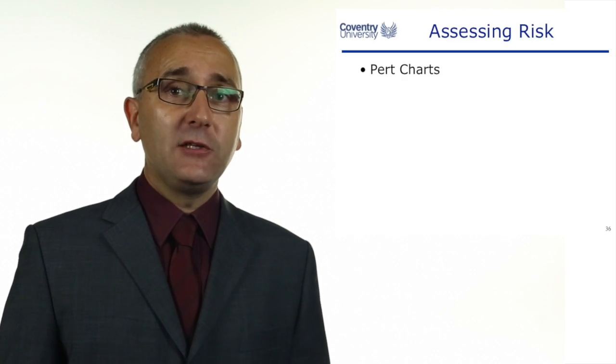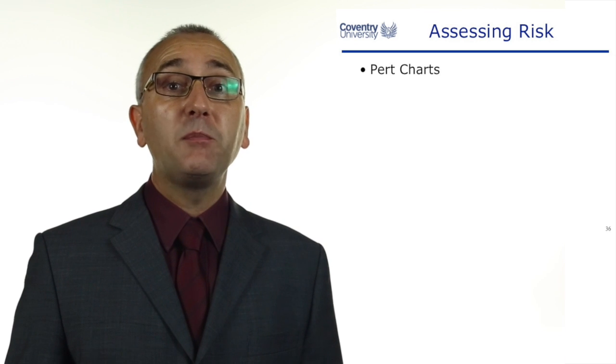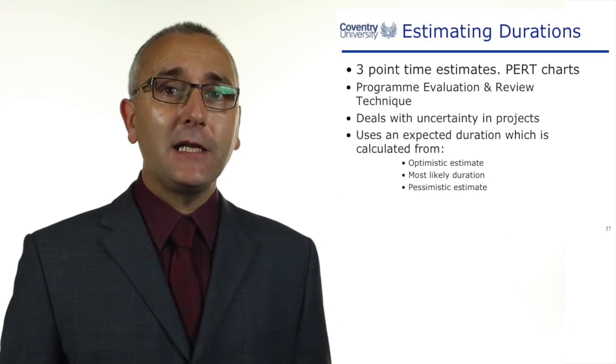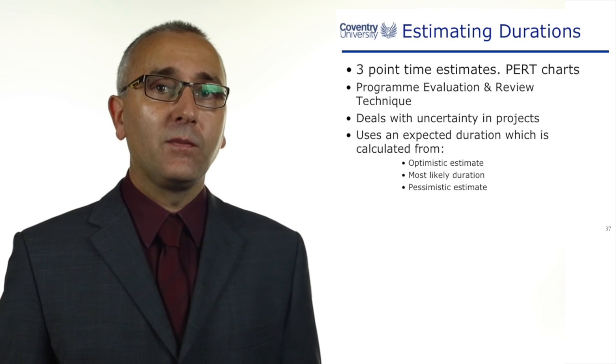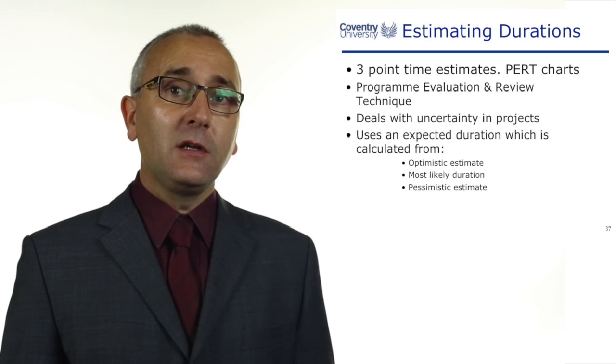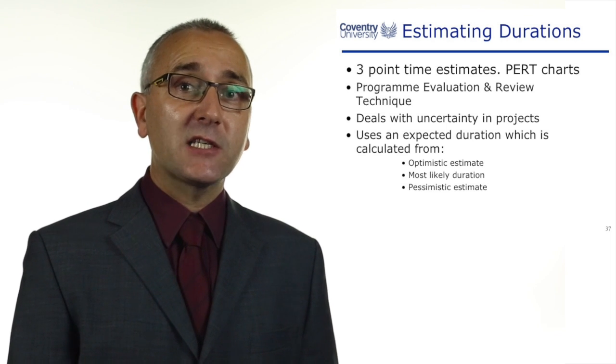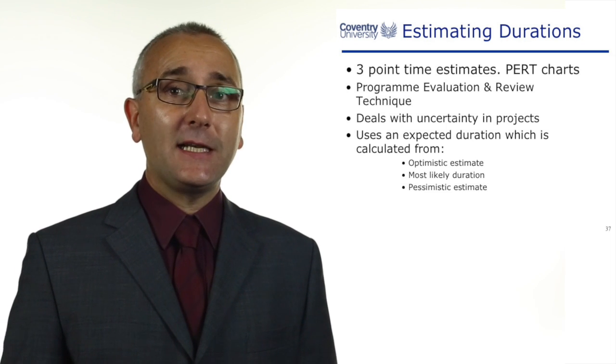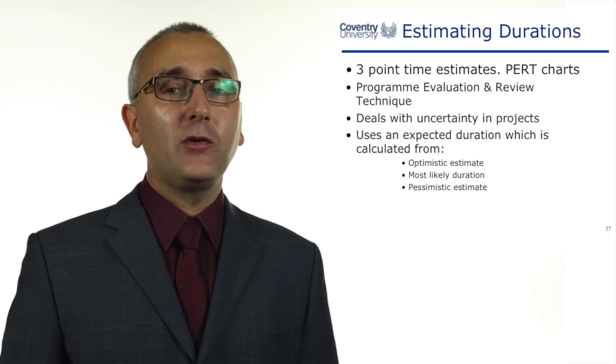Our final way of assessing risks is PERT analysis. We've already met this in the Project Planning 2 lecture when looking at durations. Instead of a single duration estimate, we get three estimates: the optimistic, the most likely, and the pessimistic. When somebody is uncertain about the duration of a task, there is a risk the duration could be within certain ranges, and PERT analysis gives us a way of classifying that risk.